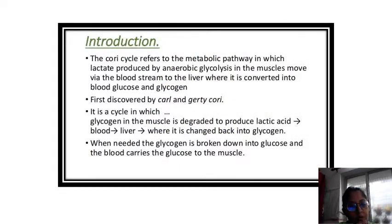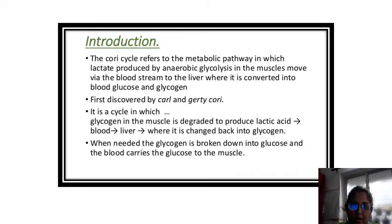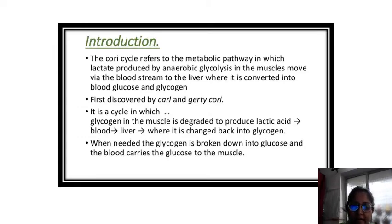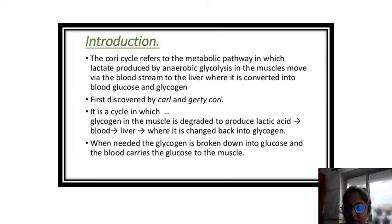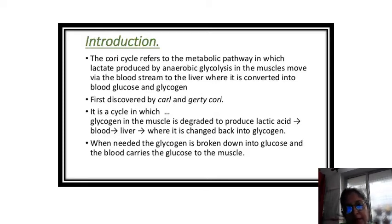The Cori Cycle, named after its discoverers Carl Ferdinand Cori and Gertie Cori, is a metabolic pathway in which lactate produced by anaerobic glycolysis in muscle is transported to the liver and converted to glucose, which then returns to the muscles and is cyclically metabolized back to lactate.